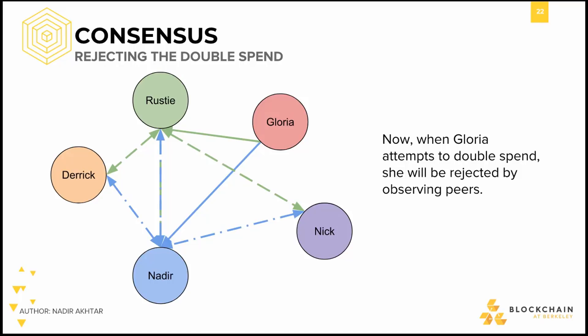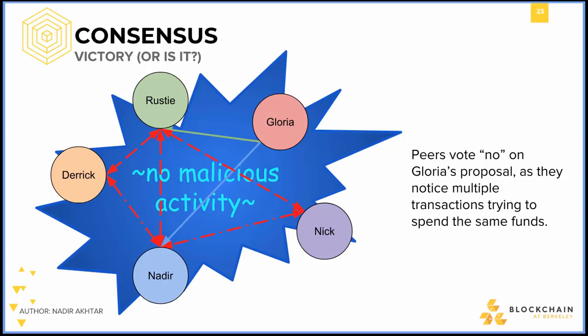Let's observe what happens when Gloria tries to double-spend under these circumstances. When Gloria attempts to double-spend, she will be rejected by observing peers. She again sends only two messages — one of a transaction to me, indicated with a solid green arrow, and one to Nadir, indicated with a solid blue arrow. However, we introduce a new component: communication. The dashed blue and green lines from Nadir and myself represent the relay of these messages to the rest of the network. By looking to the rest of the network for input, considering everyone else as the third party, we are protected against Gloria's attempts at malicious behavior. Peers in the network vote no on Gloria's proposal as they notice multiple transactions trying to spend from the same funds. The transaction doesn't go through and is not included in an update to the blockchain.